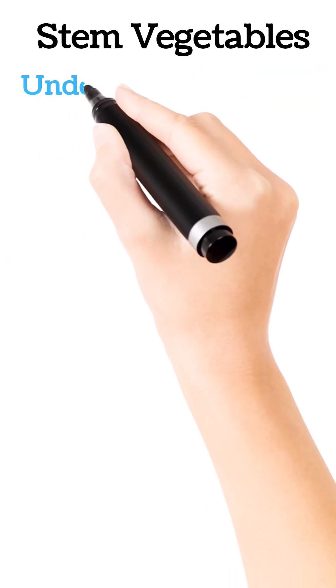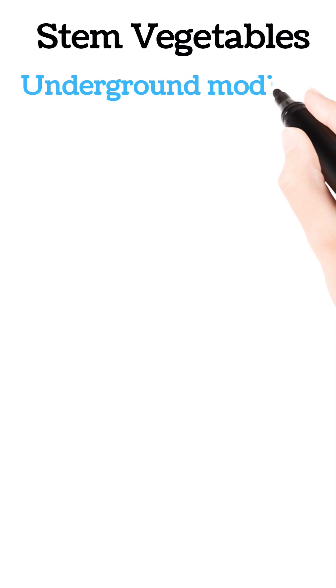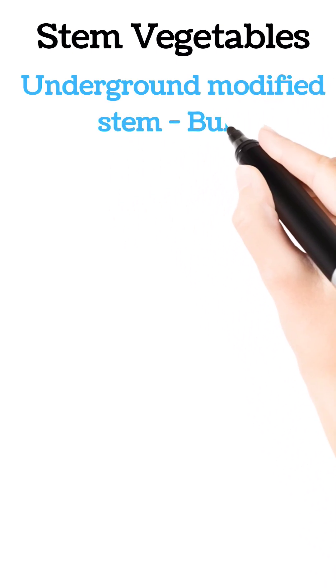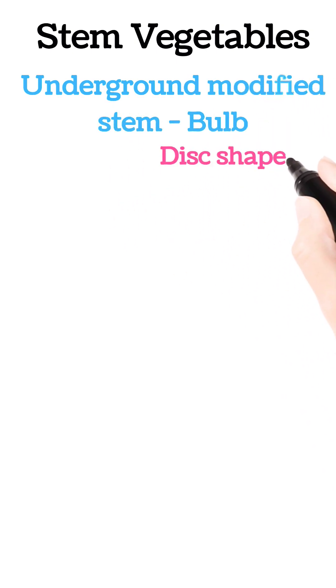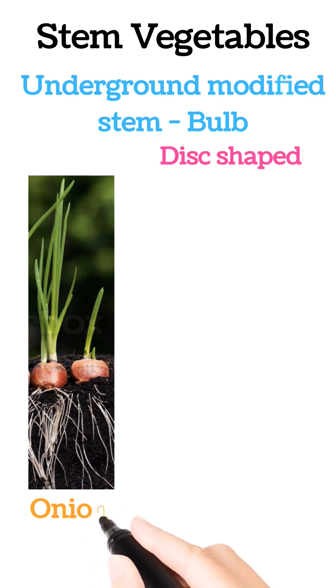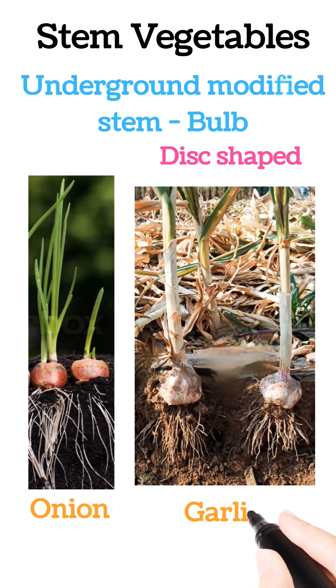The second type of underground modified stem is bulb. Bulbs are dish-shaped and round, like onion and garlic. They are also stems — they store food there.